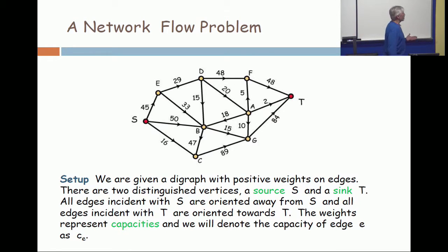So the basic setup is a network like this, but I point out the detail that any edge incident with the source S points away from it. Any edge incident with the sink T points towards it. All other vertices, in general, have edges in and edges out.